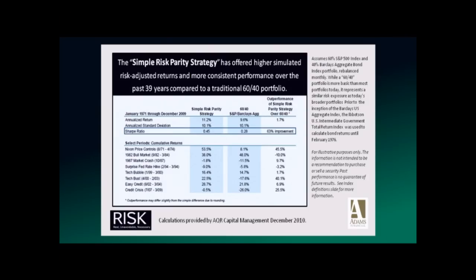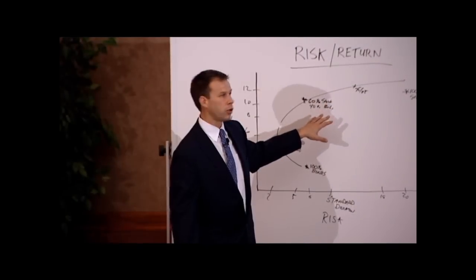In the 1987 market crash — a 22% loss in a single day — risk parity lost only 1.8%, while the 60-40 stocks-and-bonds portfolio lost 11%. During the surprise Fed rate hikes in 1994, risk parity lost 9% and the Barclays Aggregate lost minus 5%, so it actually lost a bit more as interest rates were manipulated up. In the credit crisis from July 2007 to March 2009, risk parity strategies typically lost about half a percent, while the average 60% stock, 40% bond portfolio lost 27%.